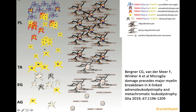If you look at the different areas of the white matter in metachromatic leukodystrophy — the pre-lesional area, the transitional area, the early gliosis, and the advanced gliosis — in the pre-lesional area, there is normal myelin and normal oligodendrocytes. But the macroglial cells have already changed morphologically, so that is why we call it an early macroglial disease.